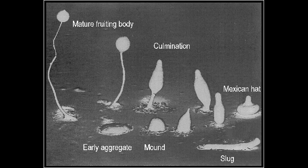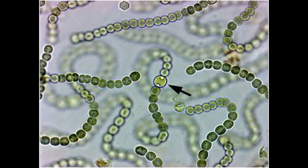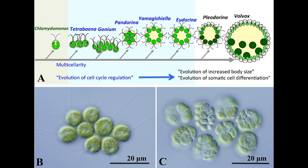Even some prokaryotes — the quintessential unicellular organisms — can form structures where cells do different jobs. The heterocysts of cyanobacteria, like Nostoc punctiforme, are a prominent example of this. In essence, the heterocyst is a cell that stops doing normal cell things so that it can fix nitrogen for other cells in its filament. Sean Doyle may not have known it, but volvacine algae run the entire spectrum of coloniality.